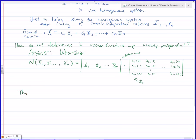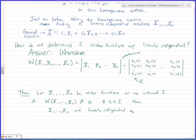And then I'm going to state this theorem loosely. The vectors x1 through xn on some interval i. If the Wronskian of those vectors is not equal to 0 for every t out of i, then x1 through xn are linearly independent on i.